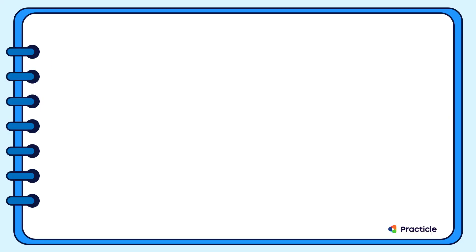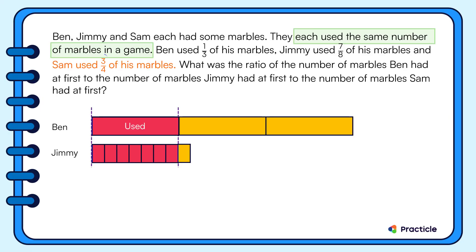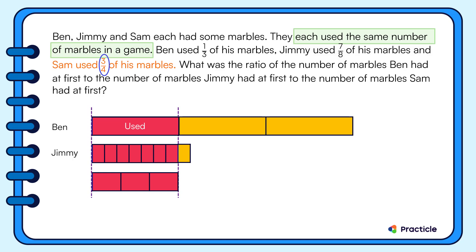Are you ready? Sam used three-quarters of his marbles. This means that he used three out of a total of four units. First, let's draw the part that should be as long as one of Ben's units — here are three units. Then, how many units should Sam have in total? Yes, he should have four units. So let's draw one more unit for Sam.